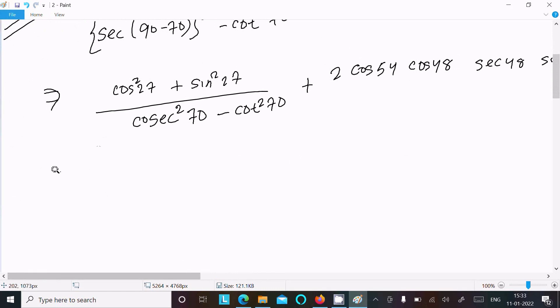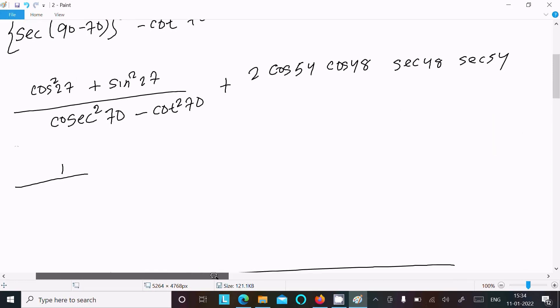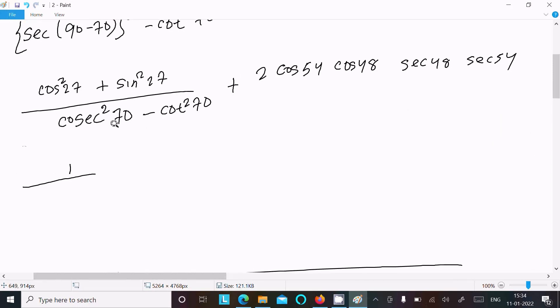After that, this is here sec 48 and sec 54. Now the next is, so here sin square theta plus cos square theta, the value that is 1. Here theta plus 27 is there, so sin square 27 plus cos square 27 that is 1. And the same here, we have the formula of sec square theta minus cot square theta equal to 1. So here theta plus 70 is there, so this value also return 1.